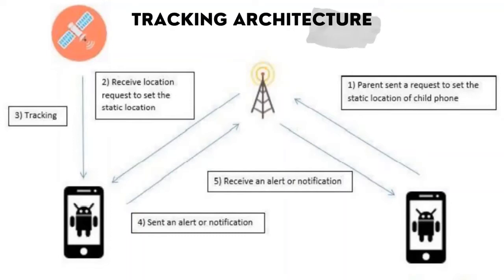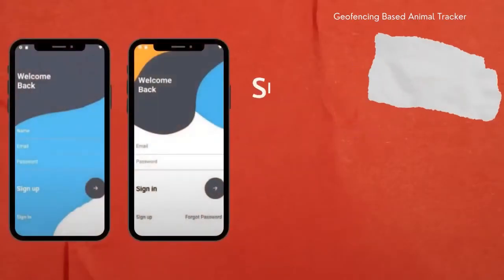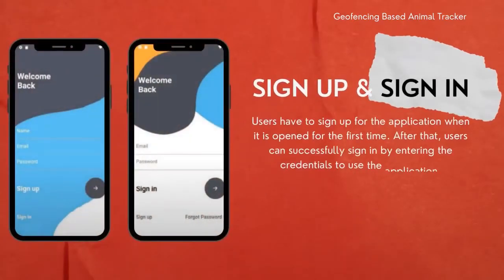The tracking architecture used in the application is similar to the figure shown on the screen. The user sends a request to the Geofence. Then GPS sets the requested location as a Geofence boundary for the target animal and keeps getting the real-time location of the animal. The moment the animal crosses the boundary set by the user, the GPS sends an alert to the application, which then pops up a notification on the user's device about the animal's interaction with the Geofence.